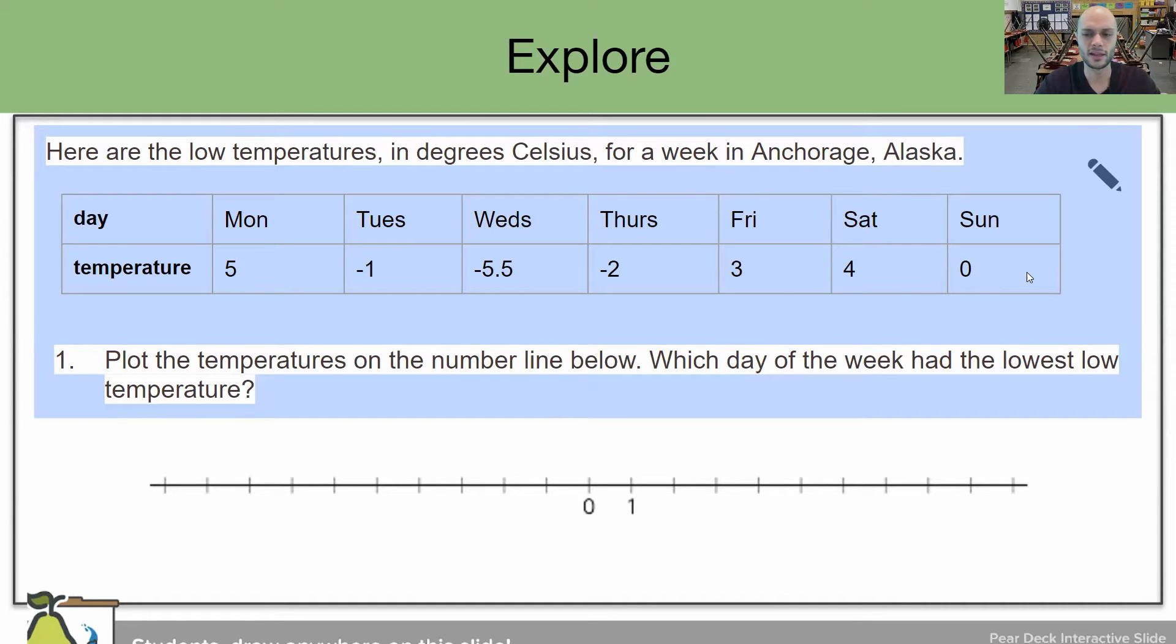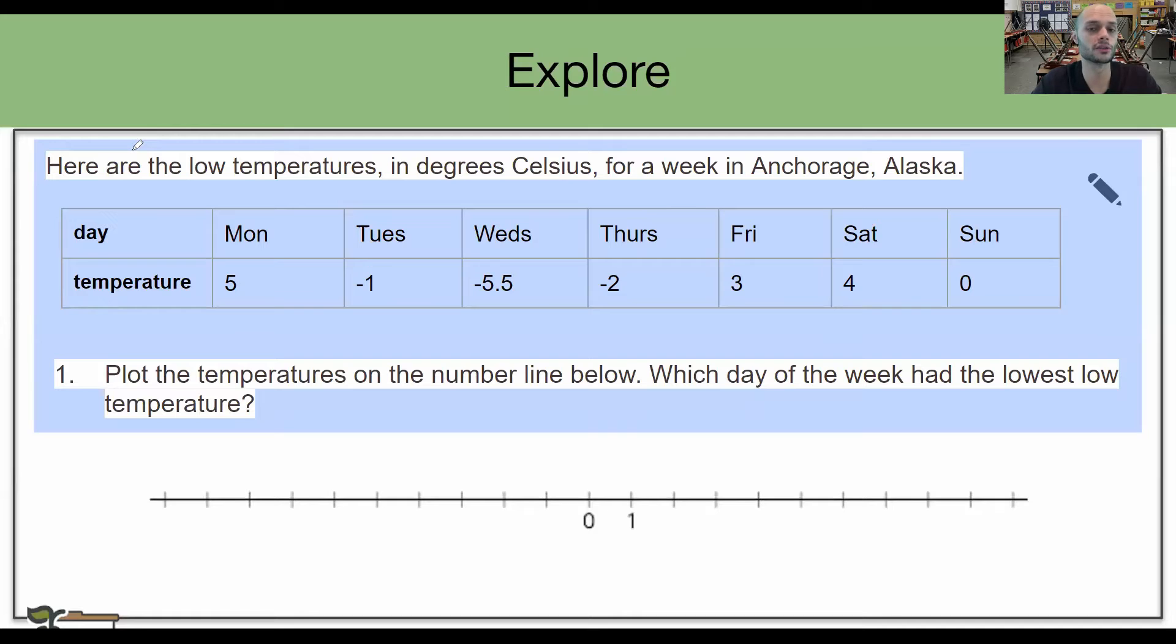With that said, these numbers down here, that's your temperature. Let's look at some of the key information in this problem. It says something called low temperatures. When the temperature is really, really low, is it hot or is it cold? When the temperature is really low, that means it is very cold outside.